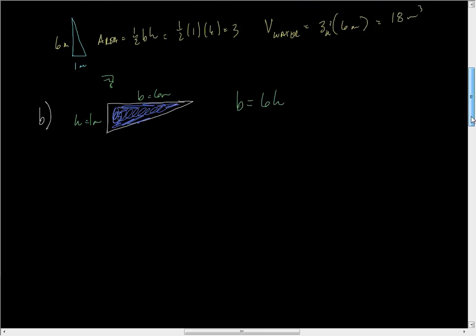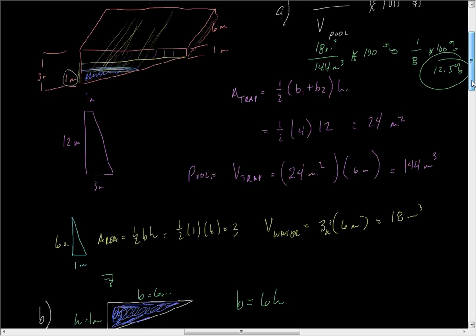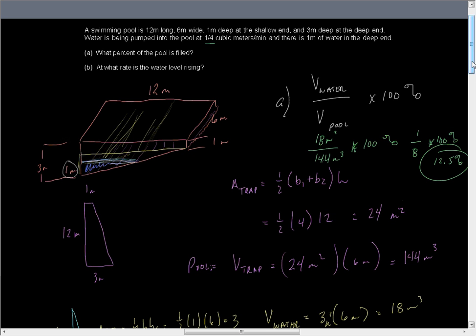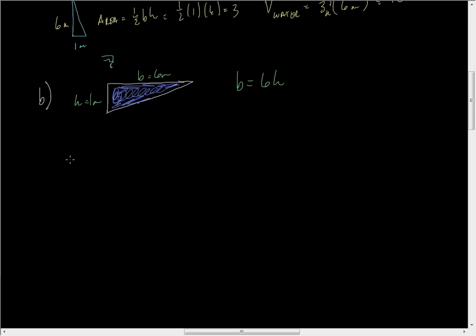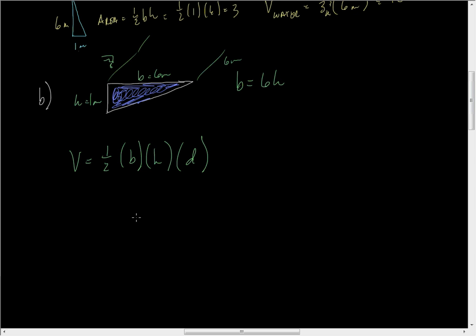We have a volume input of one quarter cubic meters per minute. Our volume equals one half times the base times the height — that's the area of the triangle — times the six-meter pool width. Since the base equals 6h, we substitute: V = one half times 6h times h times six. That gives six times six times one half, which is 18, so V = 18h².